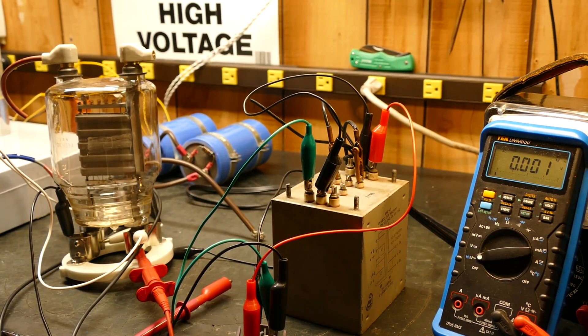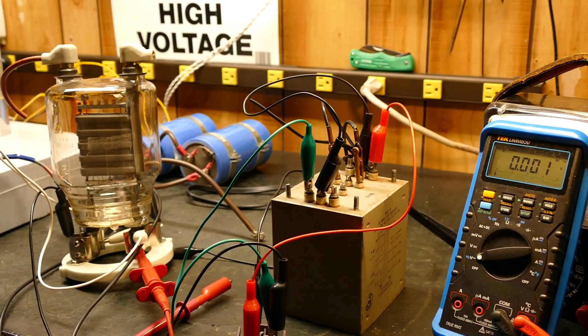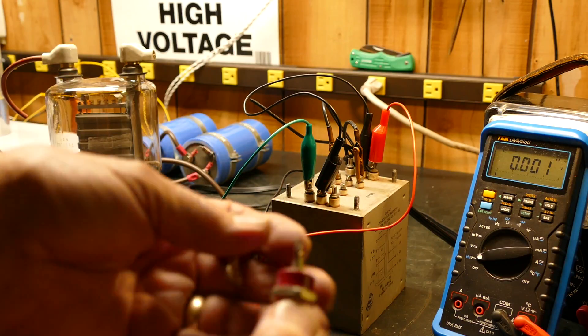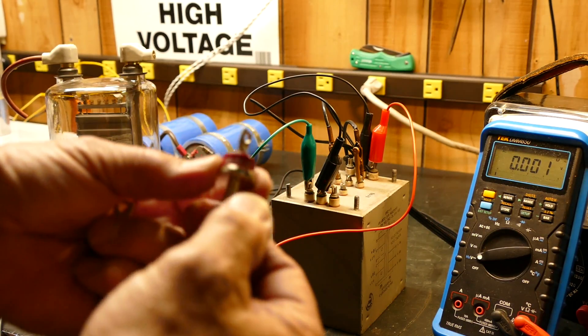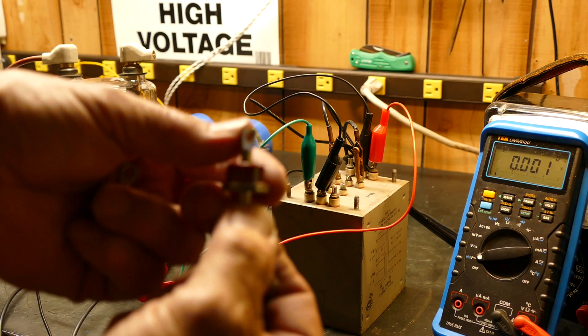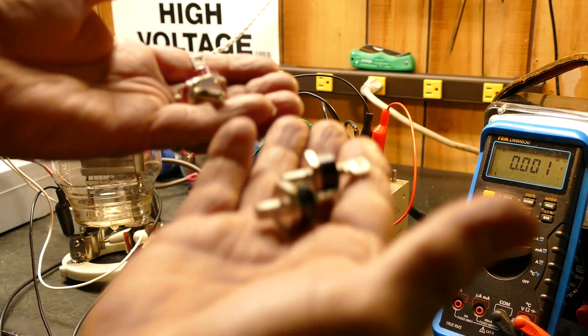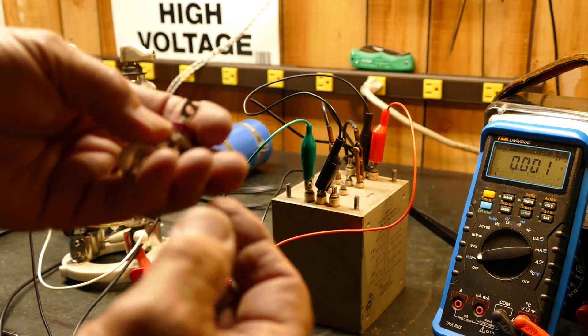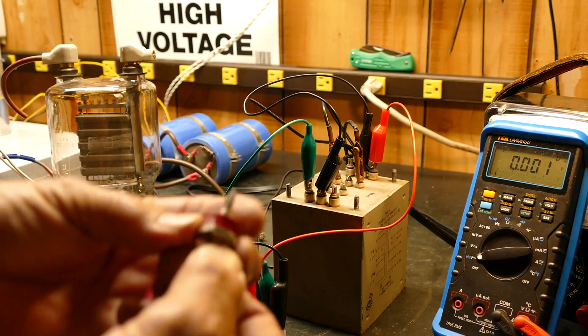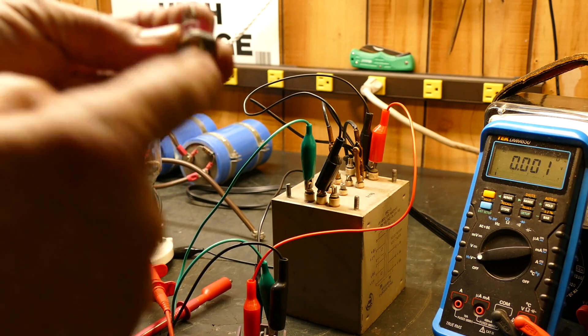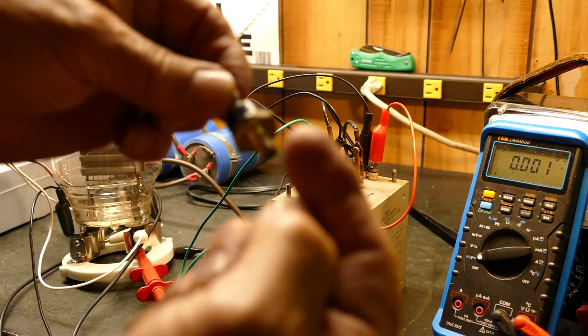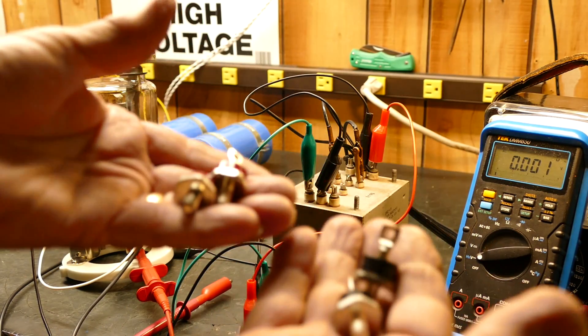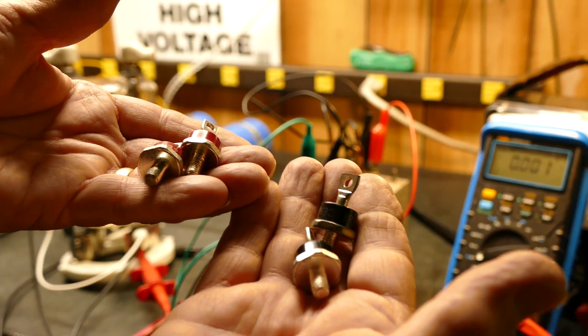So what I have are these diodes right here - these are IN3213 and IN3213R. The difference is that the cathode on this one is pointing toward the base, and the cathode on these are pointing upwards, which allows you to mount these on the heat sink. I have lots of this kind of stuff.